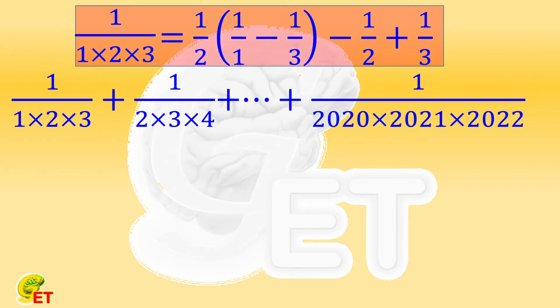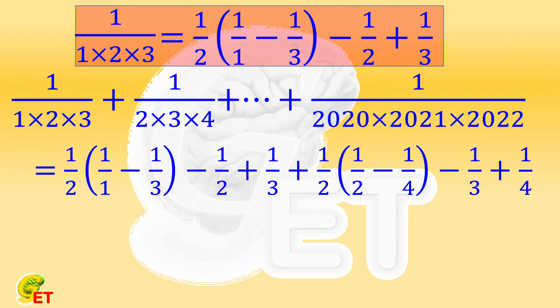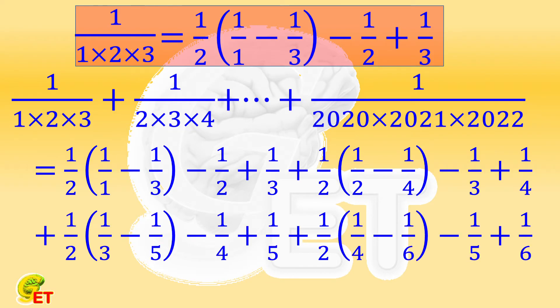Now, let's put this equation into each of its terms. The first term equals to half of the difference between 1 over 1 and 1 over 3, minus 1 over 2, and plus 1 over 3. The second term is half of the difference between 1 over 2 and 1 over 4, minus 1 over 3, and plus 1 over 4. The third term is half of the difference between 1 over 3 and 1 over 5, minus 1 over 4, and plus 1 over 5. And so forth.